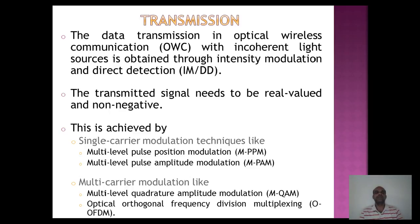In general, data transmission in optical wireless communication using coherent light sources is obtained through intensity modulation and direct detection. For intensity modulation and direct detection, the signals must be real-valued and non-negative. This is achieved by two approaches: single carrier modulation techniques such as PAM and PPM, and multi-carrier modulation techniques such as multi-QAM and OFDM (optical orthogonal frequency division multiplexing).